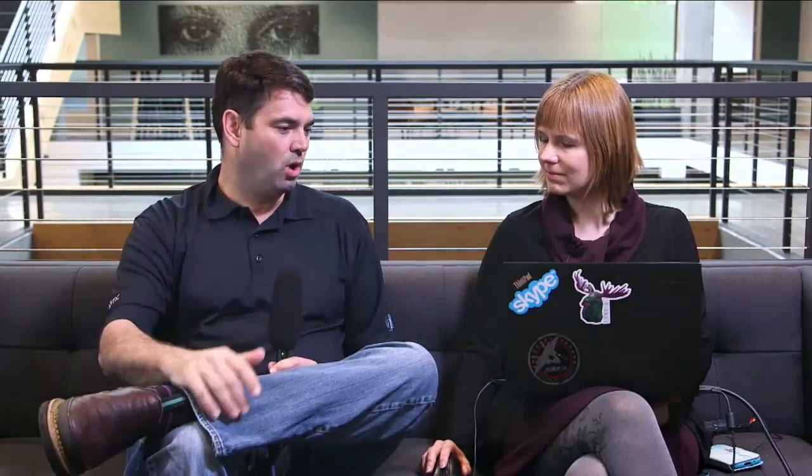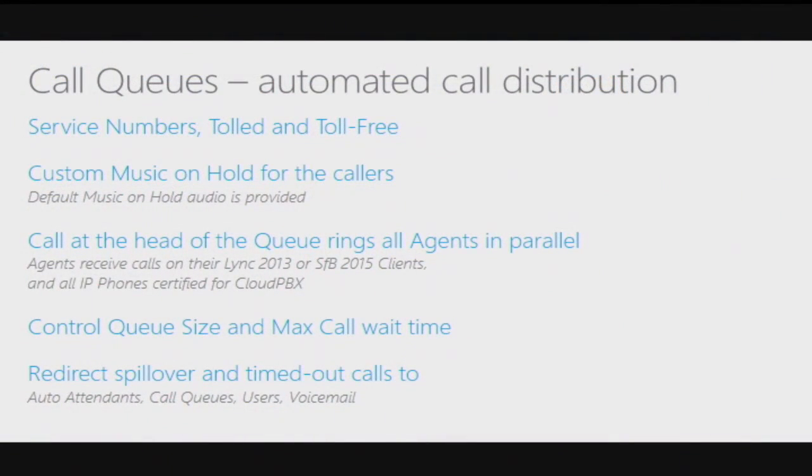But an auto attendant only takes care of your first set of routing. What if you want to make sure you hit all of your sales people at once? That is a separate functionality known as call queues — which is the new name for the old hunt groups. Call queues provide automated call distribution, ensuring calls are handled in an orderly way.